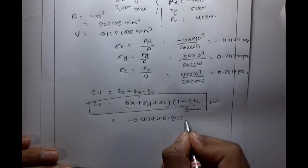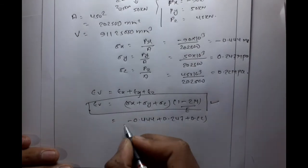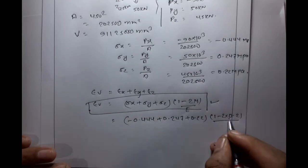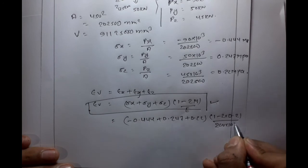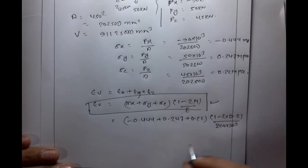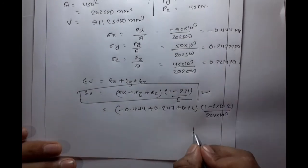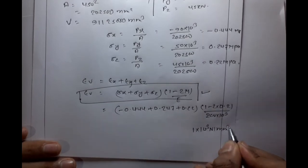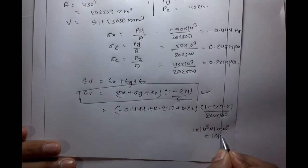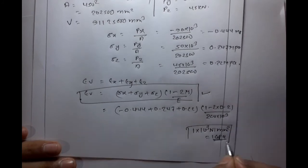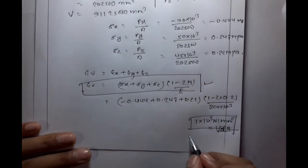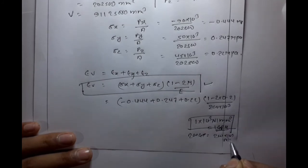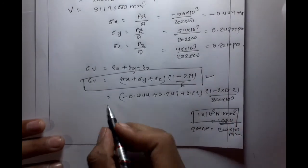Substituting: Sigma X + Sigma Y + Sigma Z = minus 0.444 + 0.247 + 0.221. Mu = 0.3. E = 200 GPa = 200 x 10^3 Newton per mm squared. Note: 1 GPa = 1 x 10^3 Newton per mm squared, so E = 200 x 10^3 N/mm².